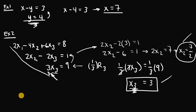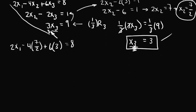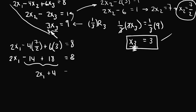Now we have x3 and x2, so we can plug both values into the first equation and solve for x1. We get 2x1 minus 4 times (7/2) plus 6 times 3 equals eight. Simplifying: 4 times 7/2 is 14, and 6 times 3 is 18, so 2x1 minus 14 plus 18 equals eight. Negative 14 and 18 combine to give positive four, so 2x1 plus 4 equals eight. Subtracting four and dividing by two gives x1 equals two.